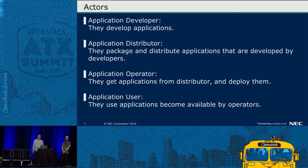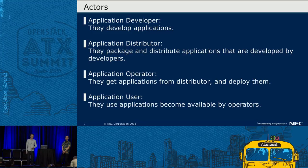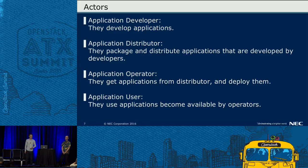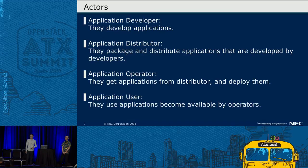We support these four actors who need to deploy applications. First, application developer — they develop applications. Second, application distributor — they package and distribute applications that are developed by developers. Third, application operator — they get applications from the distributor and deploy them. Fourth, application user — they use applications made available by operators.